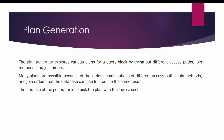The plan generator explores various plans for a query block by trying out different access paths, join methods, and join orders. Many plans are possible because of the various combinations of access paths, join methods, and join orders that the database can use to produce the same result. The purpose of the plan generator is to pick the plan with the lowest cost. More details about access paths, join methods, and join orders will be covered in the forthcoming slides.